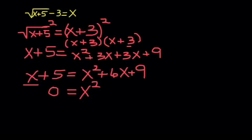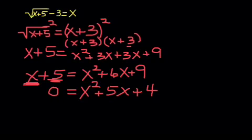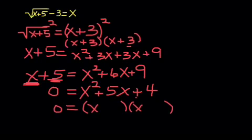I'm going to move the x to the right side — it becomes negative x when it goes across the equal sign, so I have 6x minus x, which is 5x. And the plus 5 becomes minus 5 when I move it to the right side, and 9 minus 5 is plus 4. Now looking at this quadratic, it does factor. I put x and x here and I'm looking for numbers that multiply to get 4 and add to get 5 — those are 4 and 1. Both are positive. If you've forgotten how to factor, I invite you to look at the lessons on factoring.